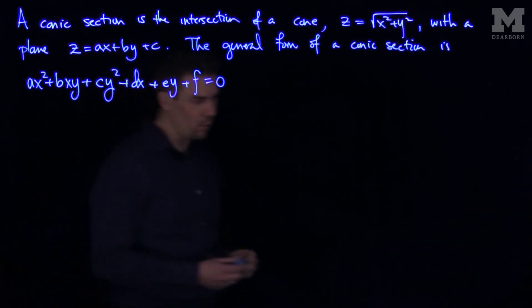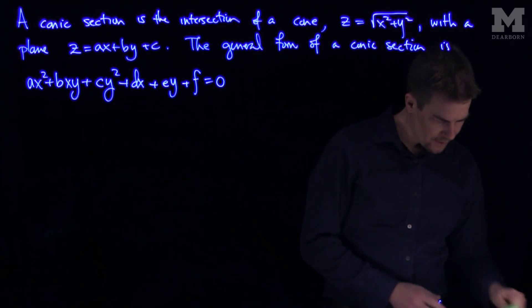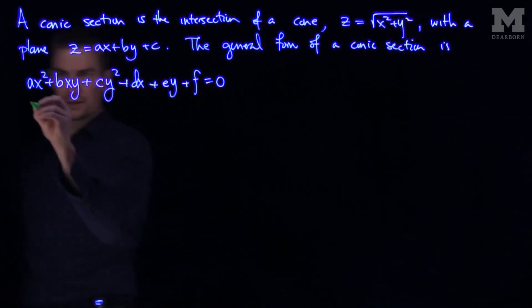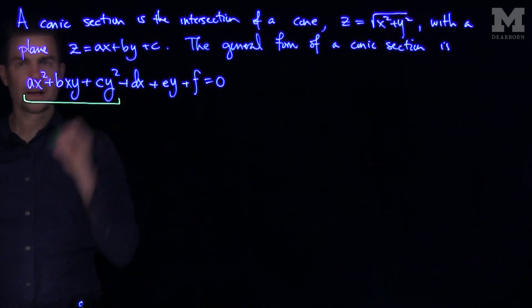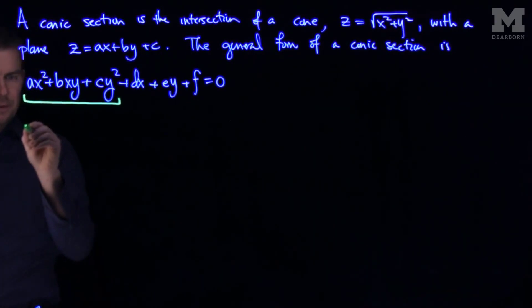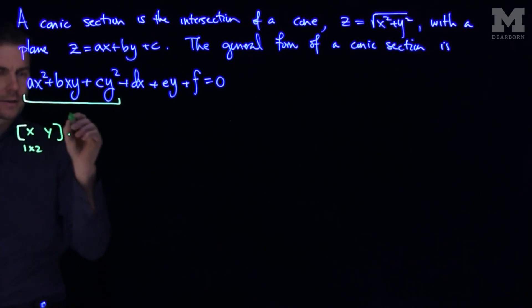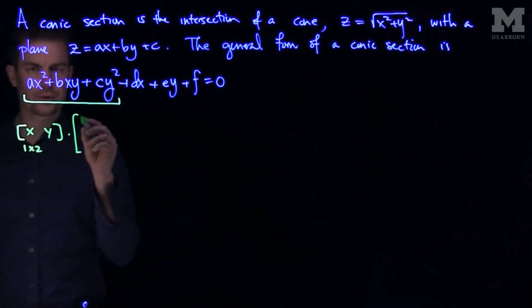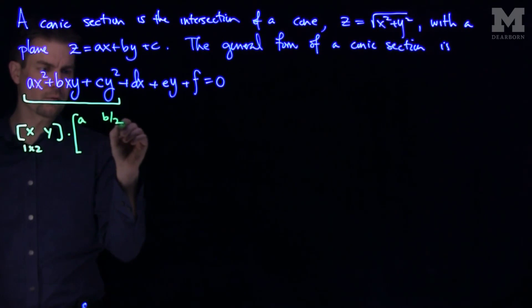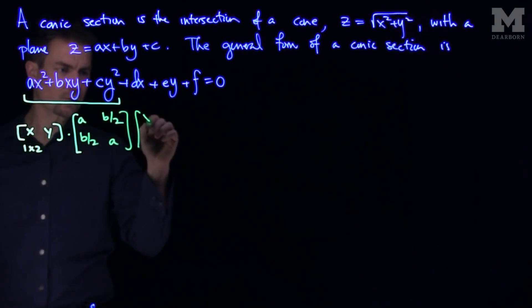And now it's important for us to understand this principal part, this principal quadratic part, is a quadratic form. This can be written as a one row by two column matrix, x, y, times a two by two matrix, a, b over two, b over two, c, x, y.